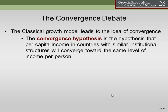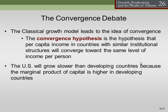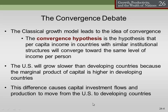The convergence hypothesis is the hypothesis that per capita income in countries with similar institutional structures will converge towards the same level of income per person. What we call conditional convergence says that all things being equal, countries will converge to the same steady state level of output per person. The idea is the U.S. will grow slower than developing countries because marginal product of capital is higher in developing countries. This difference causes capital investment flows and production to move from the U.S. to developing countries, stimulating growth.